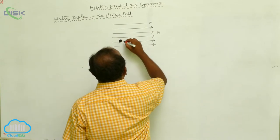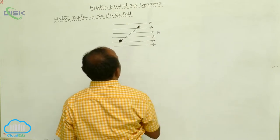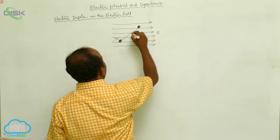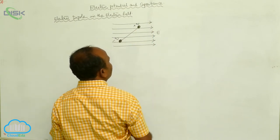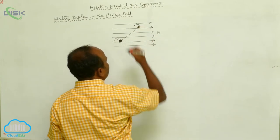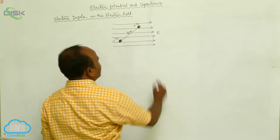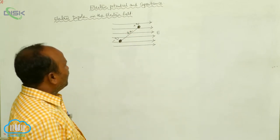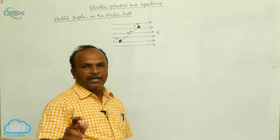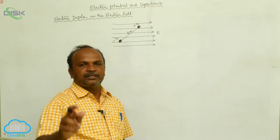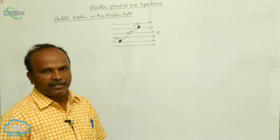The dipole consists of two charges: the negative charge represented by -Q and the positive charge represented by +Q. The separation between these two charges is represented by 2A. Whenever equal and opposite charges are separated at a fixed distance, such an arrangement is called an electric dipole.